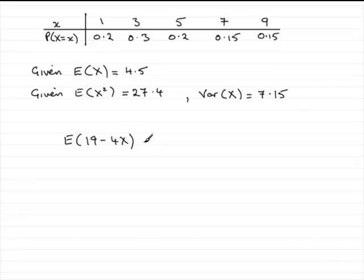And to do this, this is exactly the same as the expected value of this constant 19 minus the expected value of 4 times the variable x.